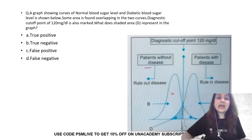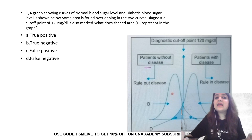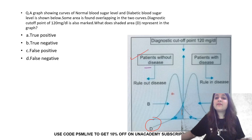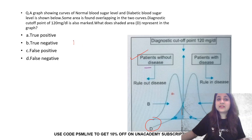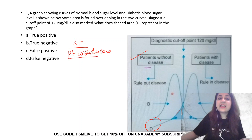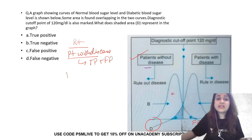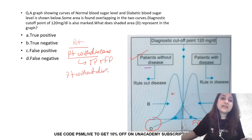Coming to the last one: this is a graph showing the curve of normal blood sugar and diabetic blood sugar levels. Some area is found overlapping in the two curves, and a diagnostic cutoff point is given. You have to answer what the shaded portion represents. On the left side you have patients without disease; on the right side you have patients with disease. By a test, what will a point on the right side indicate? True positive and false positive — so the shaded portion on the right will be false positive.